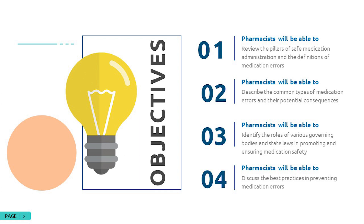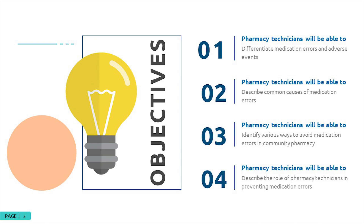Let's review today's learning objectives. The pharmacist's learning objectives are to review the pillars of safe medication administration and the definitions of medication errors. We will describe the common types of medication errors and their potential consequences. We will identify the roles of various governing bodies and state laws in promoting medication safety, and discuss best practices in preventing medication errors. Technician learning objectives include differentiating medication errors and adverse events, describing common causes, and identifying ways to avoid medication errors in the community pharmacy, including the role of pharmacy technicians.